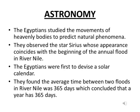In astronomy, the Egyptians studied the movement of heavenly bodies — stars, the moon and the sun — to predict natural phenomena. They observed that the star Sirius always appeared when the annual flood in the River Nile occurred, so wherever Sirius appeared they knew the annual flood was coming. The Egyptians were also the first to devise a solar calendar.